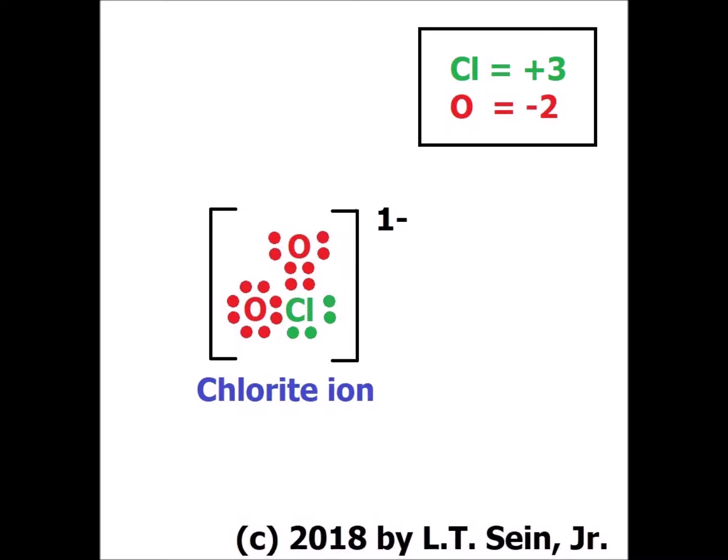Chlorite ion is the conjugate base of chlorous acid. It has twenty electrons — the exact same number as chlorous acid — but now it has a minus one charge because we've removed the proton to make the conjugate base. Just as for chlorous acid, chlorine now has four electrons; since it started with seven, it must have an oxidation number of plus three in chlorite ion.